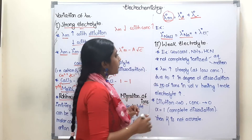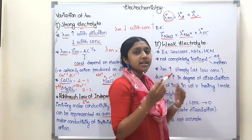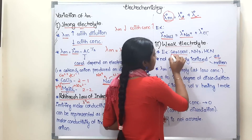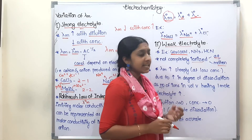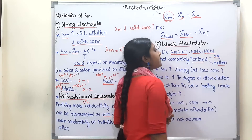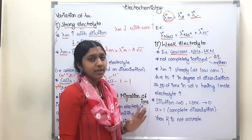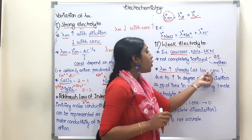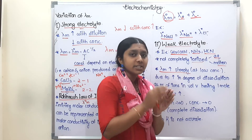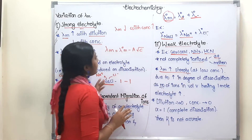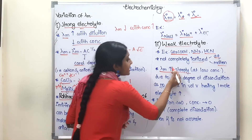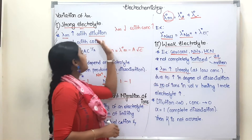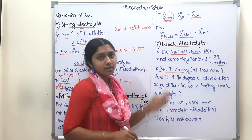Next, weak electrolyte. A weak electrolyte is not fully ionized — it is partially ionized into positive and negative ions in solution. Examples include CH₃COOH (acetic acid), NH₃ (ammonia), and HCN (hydrogen cyanide). For a weak electrolyte, molar conductivity increases steeply at low concentration.